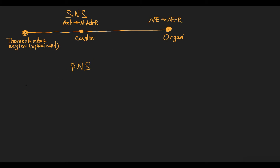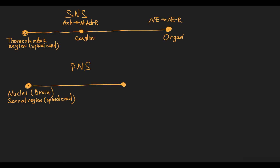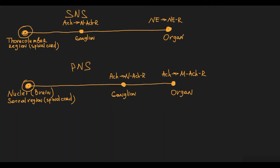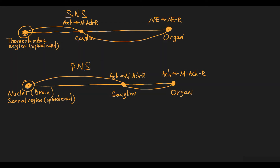In the parasympathetic nervous system, basically the same principle applies: from nuclei in the brain or from the sacral region of the spinal cord originates a long preganglionic neuron that also uses acetylcholine acting on nicotinic receptors on ganglia. From the ganglia originates a short postganglionic neuron that uses acetylcholine acting on muscarinic acetylcholine receptors on the target organ. The main difference is that sympathetic postganglionic neurons use norepinephrine, while parasympathetic postganglionic neurons use acetylcholine on muscarinic receptors.